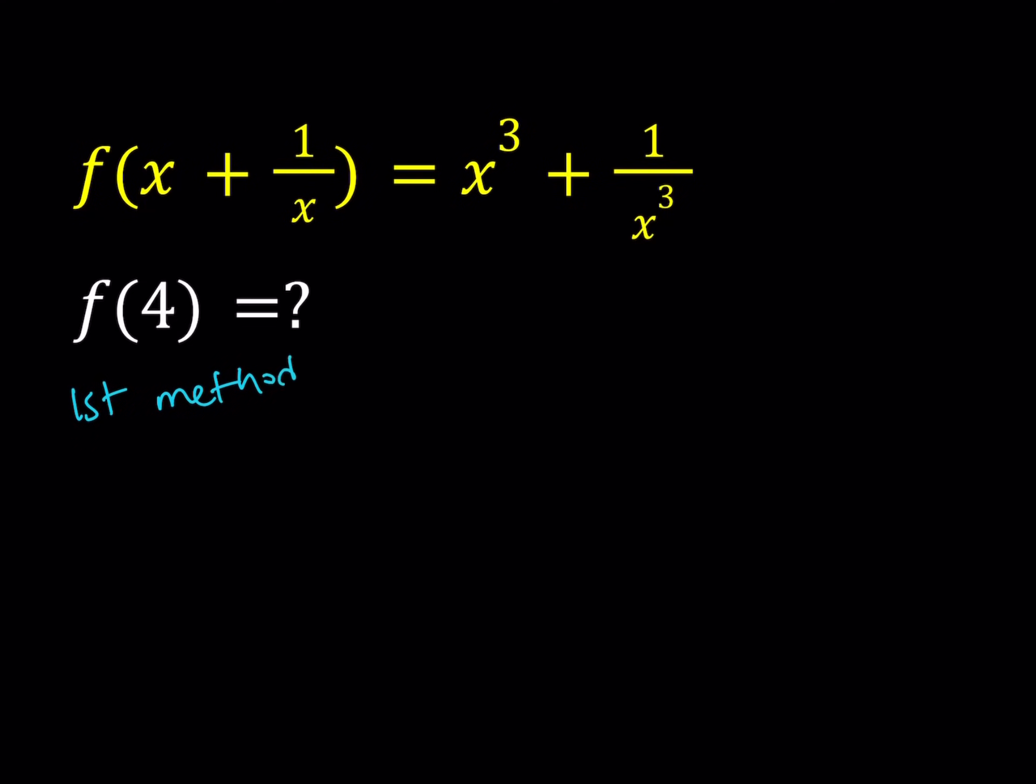So my first method is basically setting x plus 1 over x equal to 4 and then finding the x value and plugging it in on the right hand side. Obviously we're going to get a quadratic equation from here, so let's see what happens.